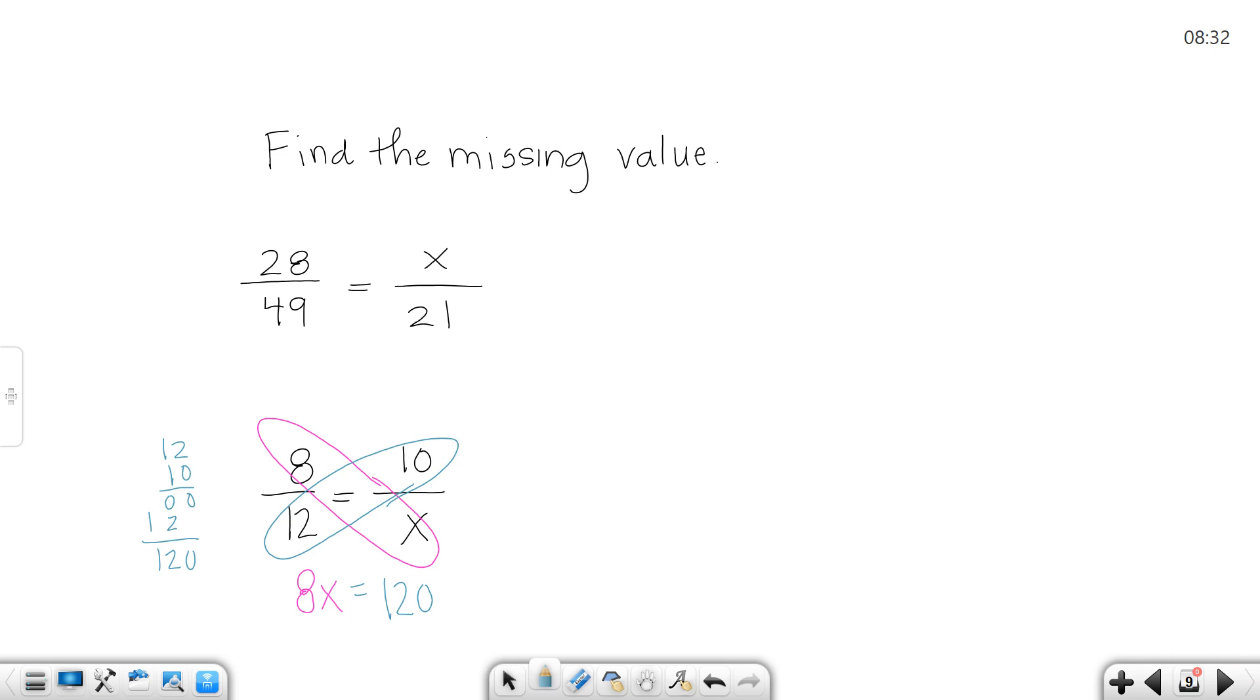Now to solve for x, all I have to do is solve that out. To solve that equation, I'm going to divide by 8 on both sides. So x would equal 120 over 8. If I divide that out, I get that x is 15. In this case, x is 15. Now there are other ways to do it as well, but that way is always going to work for you.